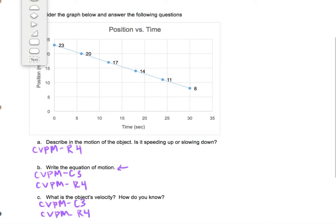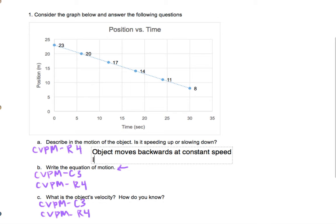So for the first part, we want to describe the motion of the object. The object moves backwards at constant speed. It neither speeds up nor slows down. Remember, this downward slope doesn't mean slowing down at all. It means moving backwards, and we need to be really careful of that.